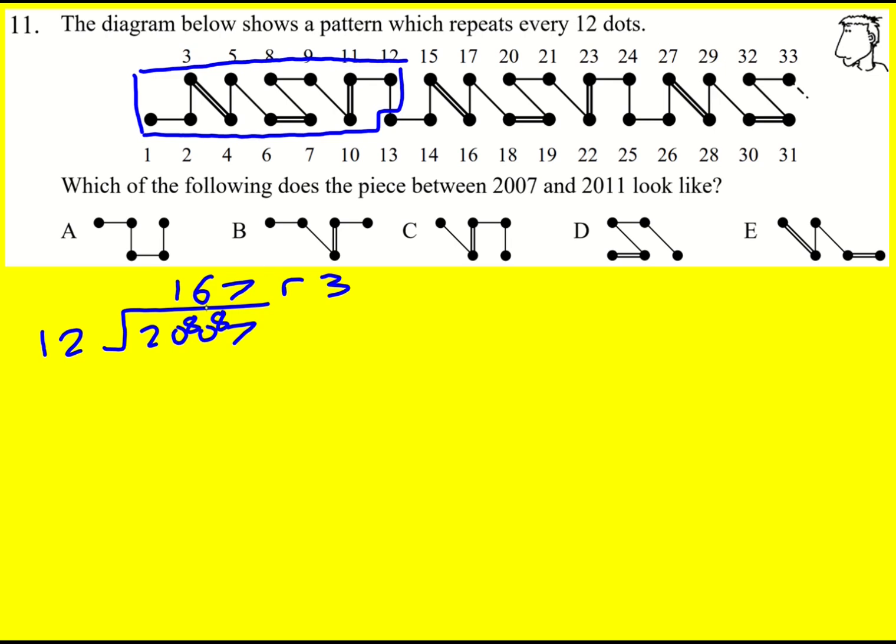What this means is I have 167 complete patterns, and remainder 3 means that I am here as my first part of the pattern. That's going to be 2007.